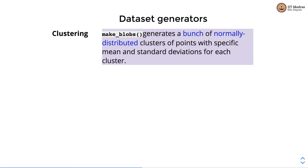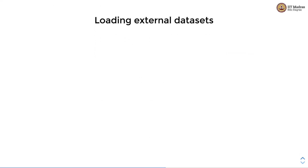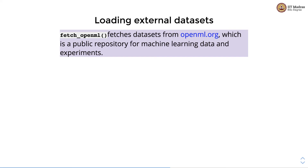Those were the three main interfaces provided by the dataset API. Apart from that, there could be other external datasets not directly supported by fetchers. For example, there is a repository called OpenML.org which has a lot of machine learning datasets and experiments uploaded by different people. We can use the fetch_openml API for fetching datasets from OpenML.org.